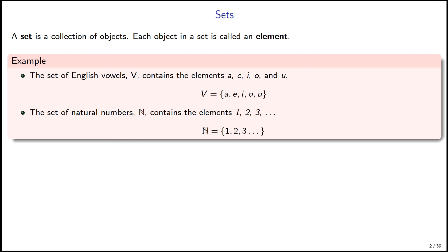We'll start off with sets. A set is just a collection of objects — it can be anything, concrete, abstract, whatever. I have two different sets here. We'll start off with a set of English vowels. We can draw this visually. Usually with sets we draw a little circle and say that's a set, and we give it a title. I can give this the title V for vowels.